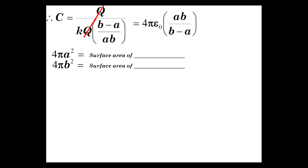So, we have C is equal to Q over V_AB. Q's go away. Now, let's go ahead and reconvert the K to 1 over 4 pi epsilon 0. So, we have 4 pi epsilon 0. AB over B minus A. Now, 4 pi A squared. That is the surface area of the sphere. The 4 pi B squared is the surface area of the B sphere.